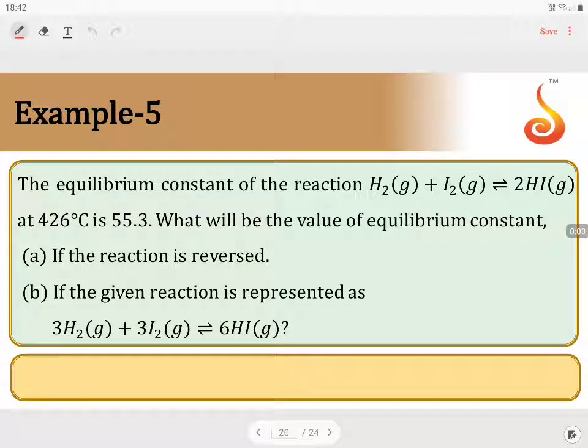The equilibrium constant of the reaction H2 plus I2 gives 2HI is 55.3. What will be the value of equilibrium constant (a) if the reaction is reversed, and (b) if the reaction is represented as 3H2 plus 3I2 gives 6HI?